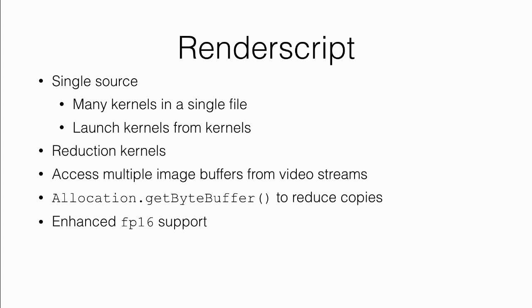RenderScript has a bunch of improvements. In a single source file you can now have many kernels that can call one another, making it easier to create complex compute programs. We also have reduction kernels for map-reduce style APIs — for instance, computing a histogram with a reduce kernel. You have access to multiple images, and we added Allocation.getByteBuffer() to help reduce the number of allocations when running RenderScript kernels. Finally, we have support for 16-bit floating points which helps cut your data size in half — if the precision works for you, you should definitely look into it.